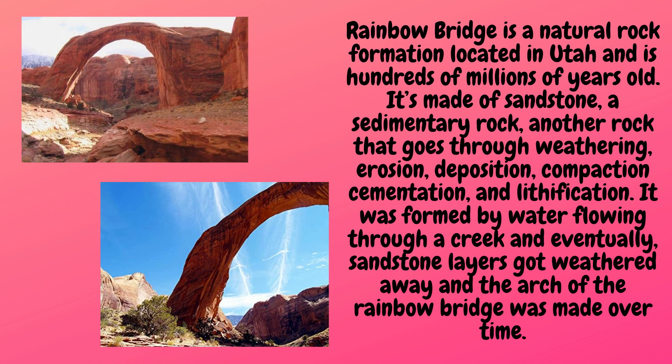Rainbow Bridge is a natural rock formation located in Utah and is hundreds of millions of years old. It's made of sandstone, a sedimentary rock, another rock that goes through weathering, erosion, deposition, compaction, cementation, and lithification. It was formed by water flowing through a creek, and eventually sandstone layers got weathered away and the arch of the Rainbow Bridge was made over time.